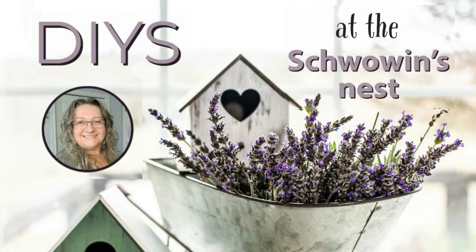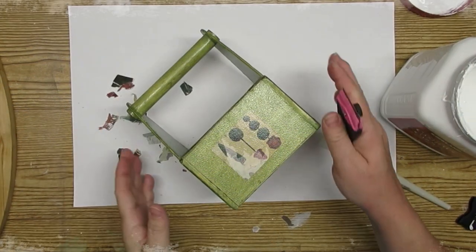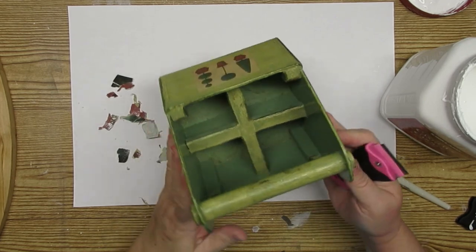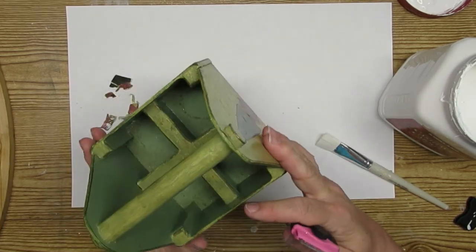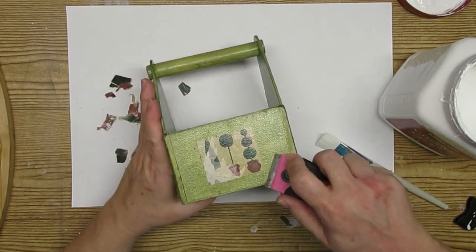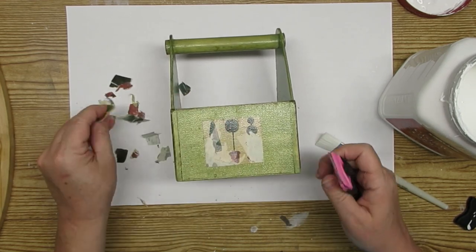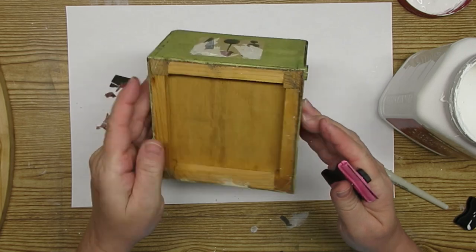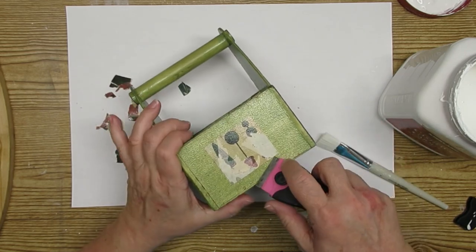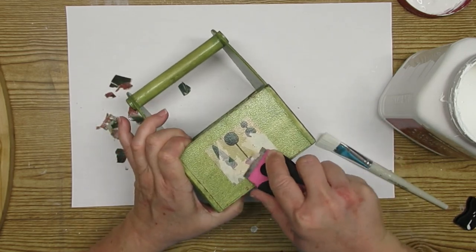Hi there, Sandra here from the Schwoven's Nest. Thanks for stopping by today. I've got three thrift store flips for you today and the first one is using this little wooden crate. I think it's really sweet but it has all sorts of stuff on it, these labels.